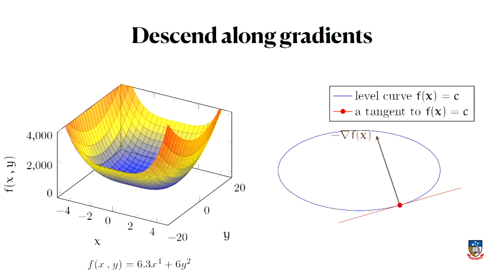If you imagine looking from the top of this surface and cutting a slice through it — so a level curve — you're at some level. If you're standing at that red point and you look around and say: behind me it's going uphill, tangent to this curve it's going flat, I can walk around the surface, but I can head down into the center by heading along the gradient.